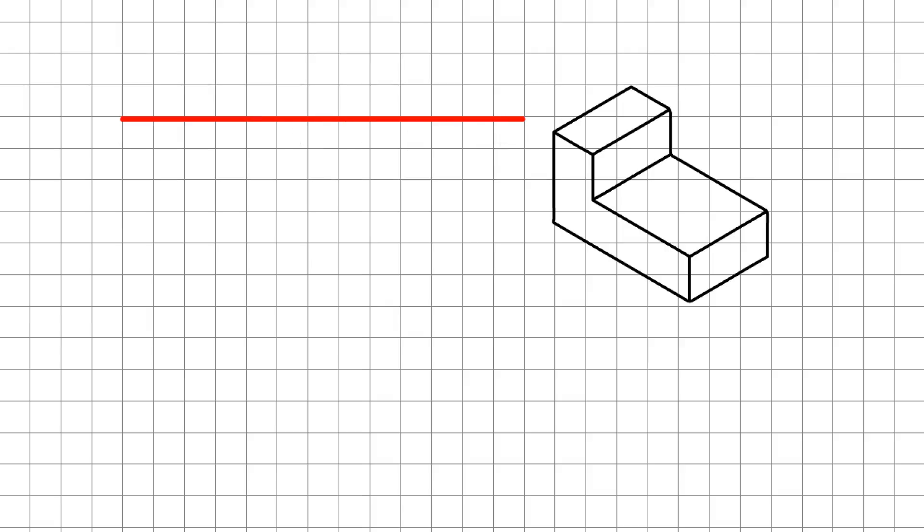Once the horizon line has been established, we need to go in and draw in two vanishing points. They need to exist somewhere on the horizon, and generally one goes on the left and one goes on the right.